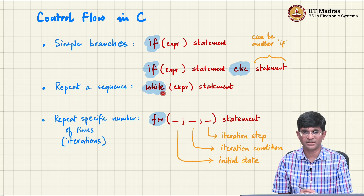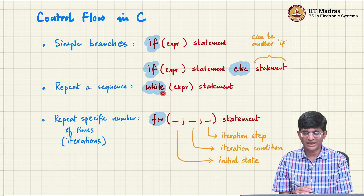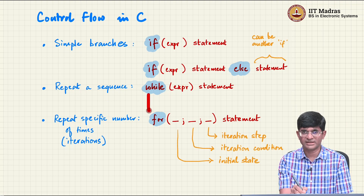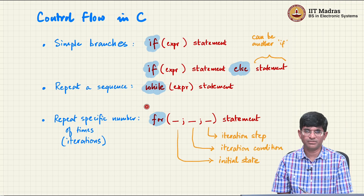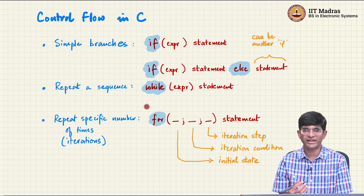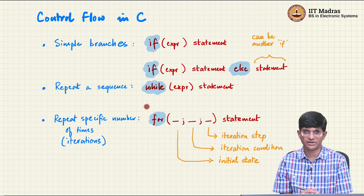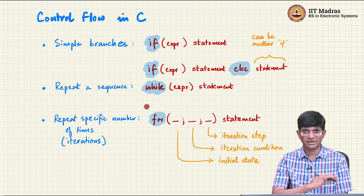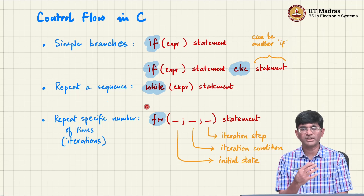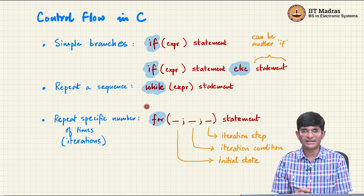We will look at that equivalence as an example later. The natural question is: why have two different things? The simple answer is convenience — both in terms of how we think about a program and how we express what we want to do. Having multiple constructs allows us to express intent more clearly and makes it easier for others to understand. That is the whole point of structured programming. Even though structured programming operates at the graph theory level and talks in terms of what operations are needed, when you translate that into an actual programming language, you need to think about usability — how easy it is for a user to understand and use what you are trying to do.